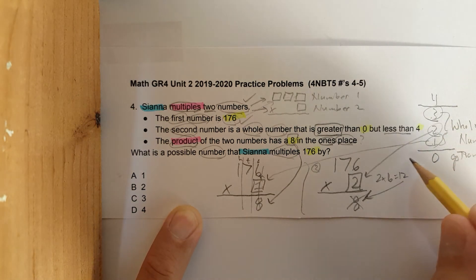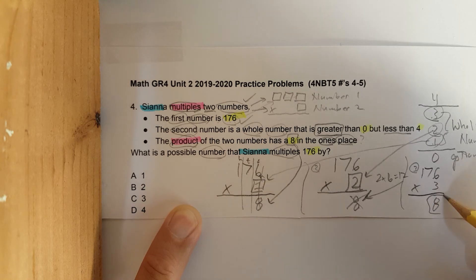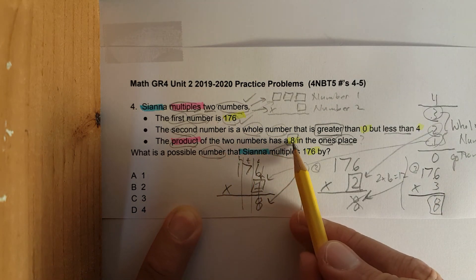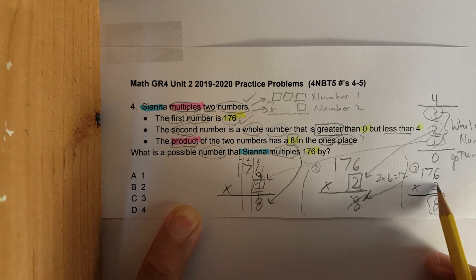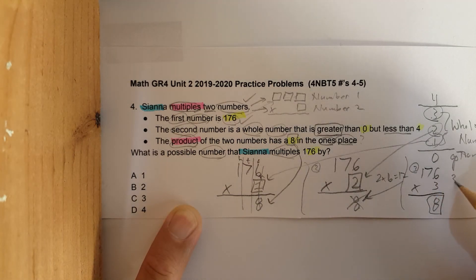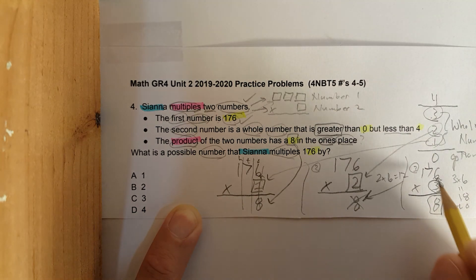So three better work. Otherwise, there's major problems going on. 176 times three. Remember, the product of the two numbers has an eight in the ones place. So this needs to be eight. Three times six, I'm going to write it over here, is 18. See that? Three times six is 18. The eight is in the ones place. The one is in the tens place. So we would carry that one when we're doing standard algorithm. The eight stays there.